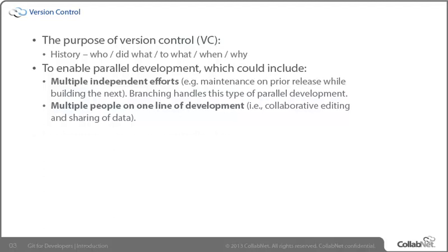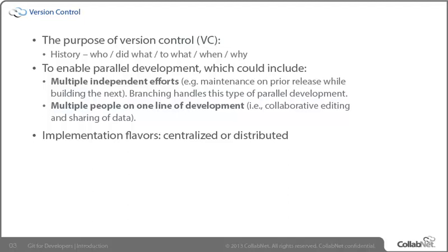There are two implementation flavors of version control that tools choose to implement. Centralized is what you've probably experienced with virtually any tool you've used in version control prior to your choice of Git. And obviously, distributed is what Git employs. We want to understand that difference — what you're going to experience differently from what you've had in the past.